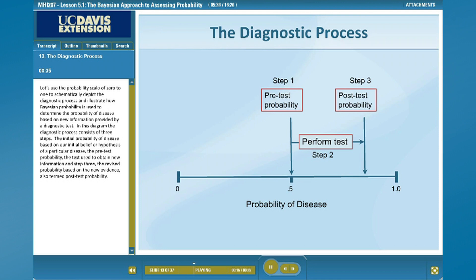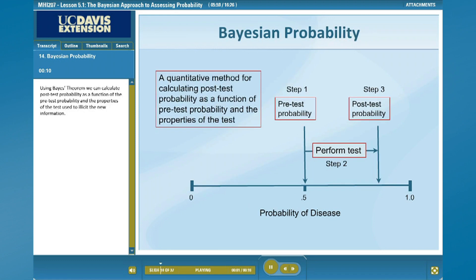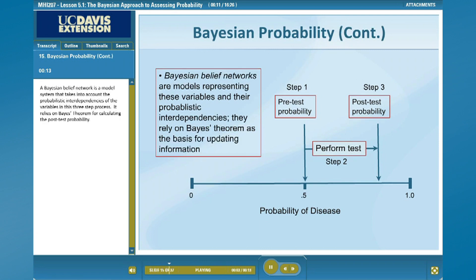In this diagram, the diagnostic process consists of three steps: the initial probability of disease based on our initial belief or hypothesis — the pre-test probability; the test used to obtain new information; and step three, the revised probability based on the new evidence, also termed post-test probability. Using Bayes' theorem, we can calculate post-test probability as a function of the pre-test probability and the properties of the test used to elicit the new information. A Bayesian belief network is a model system that takes into account the probabilistic interdependencies of the variables in this three-step process, relying on Bayes' theorem for calculating the post-test probability.